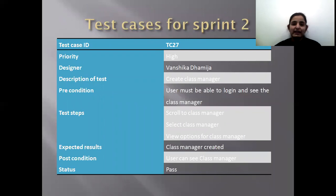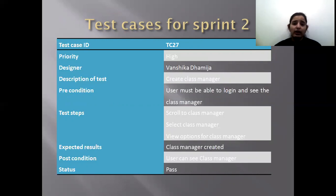There are a few test cases for Sprint 2 which I have prepared. The test case ID is TC27 and it has high priority. The description of the test is creating the class manager. The requirement is that the user must be able to log in and create a class manager. The test steps are to scroll to the class manager, select it, and view the options. The expected result is that the class manager is created and the user can see it.